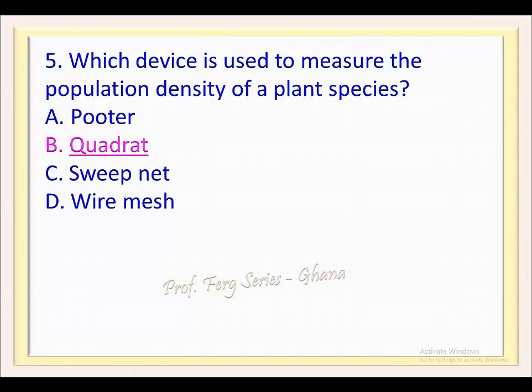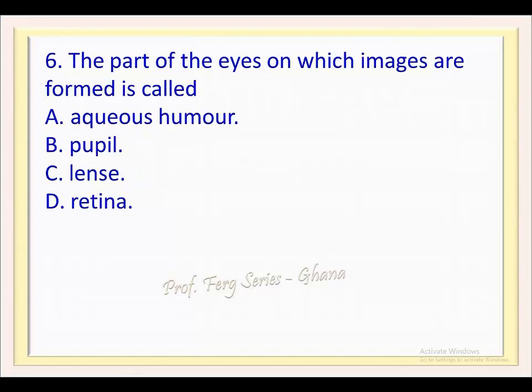The correct answer is b. Question 6. The part of the eye on which images are formed is called: a. Aqueous humor, b. Pupil, c. Lens, d. Retina. The correct answer is d.